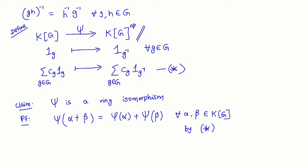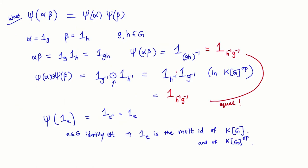As a consequence of this isomorphism, right modules for KG^op and left modules of KG are the same thing. If your ring is KG, then right KG-modules and left KG-modules are really the same thing — because you can use this isomorphism to take a left module over KG and convert it: a left module over KG via this isomorphism becomes a left module over KG^op, but a left module over KG^op is just a right module over KG. So left and right modules are equivalent notions for KG.